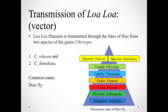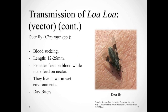Two species of flies from the genus Chrysops are responsible for the transmission of this disease. Their common name is deer fly. They belong to the order Diptera and the family Tabanidae. Deer flies are blood-sucking species, 12 to 25 millimeters long. Females usually feed on blood for reproduction, while males feed only on nectar. Deer flies are most abundant in areas containing ponds, marshes, streams, or bogs, and come out only during the day when the weather is warmer.